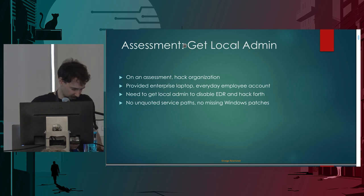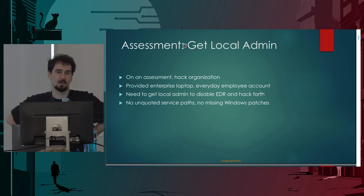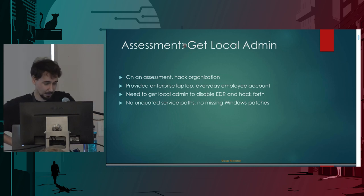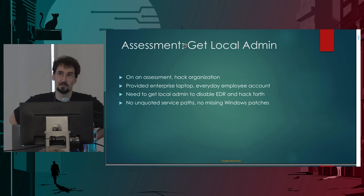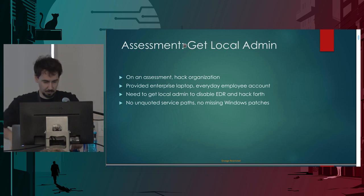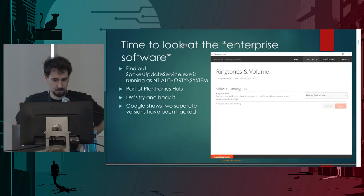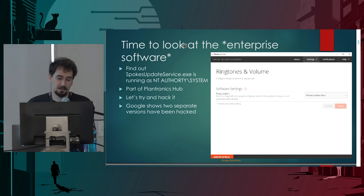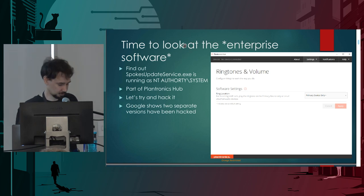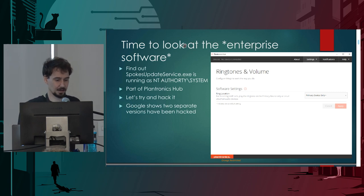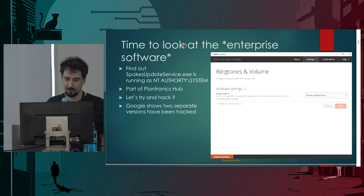If you've done this type of work before, you'll know it's often quite hard. I looked for the telltale normal things — unquoted service paths, missing Windows patches — but I didn't really find much there. So I started looking at the enterprise software. What I found was this thing called spokesupdateservice.exe, and it was running as NT Authority SYSTEM. It's part of Plantronics Hub.